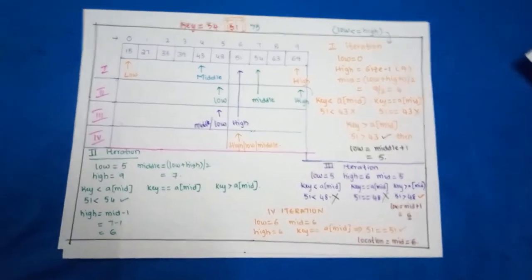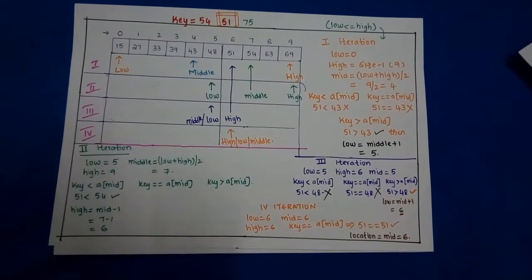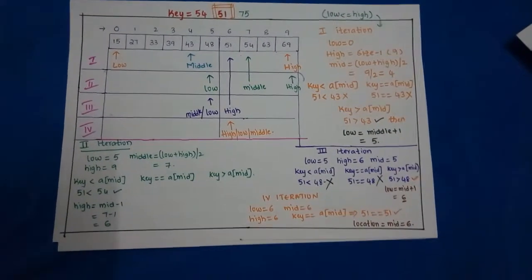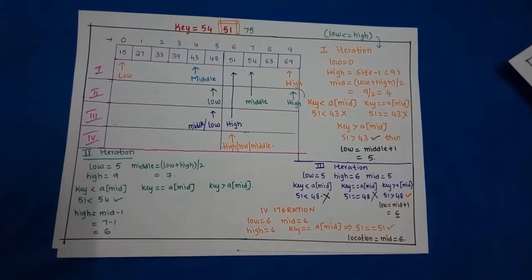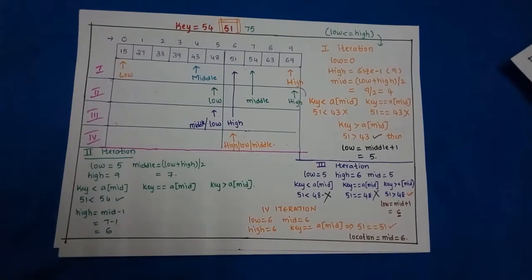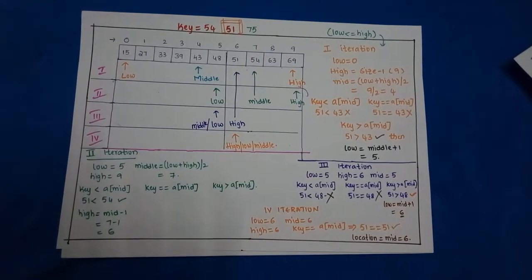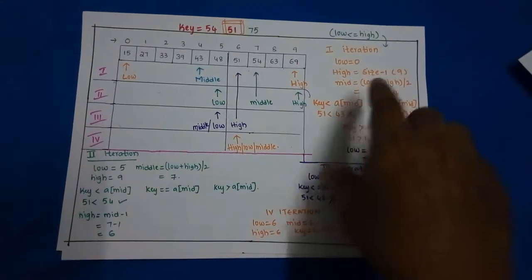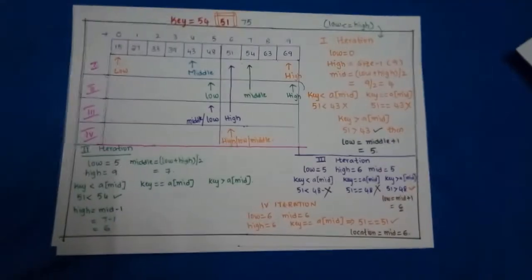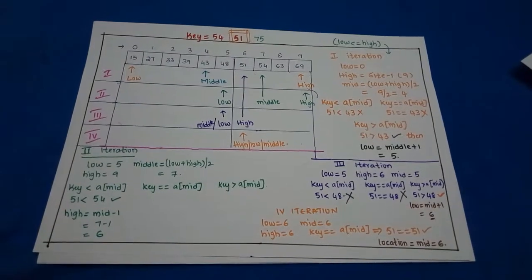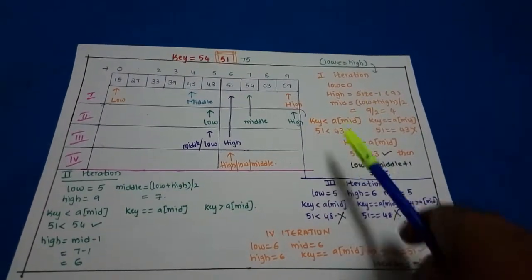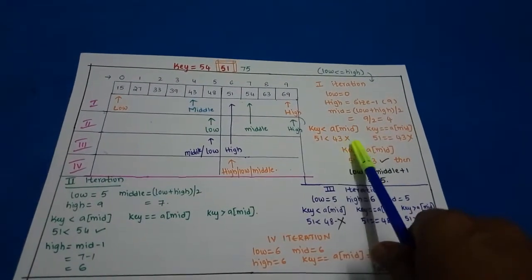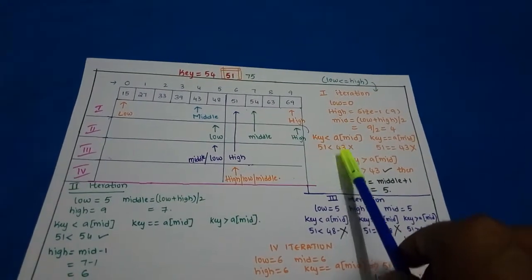We need to know the low value and high value. The low value is index 0 and the high value is index 9 (value 69). The middle value is the average of low and high — low plus high divided by 2 — which gives index 4, value 43. We check the middle value against the key value: key is 51. 51 == 43 is false. Then we check if key is less than a[mid]: 51 < 43 is also false.